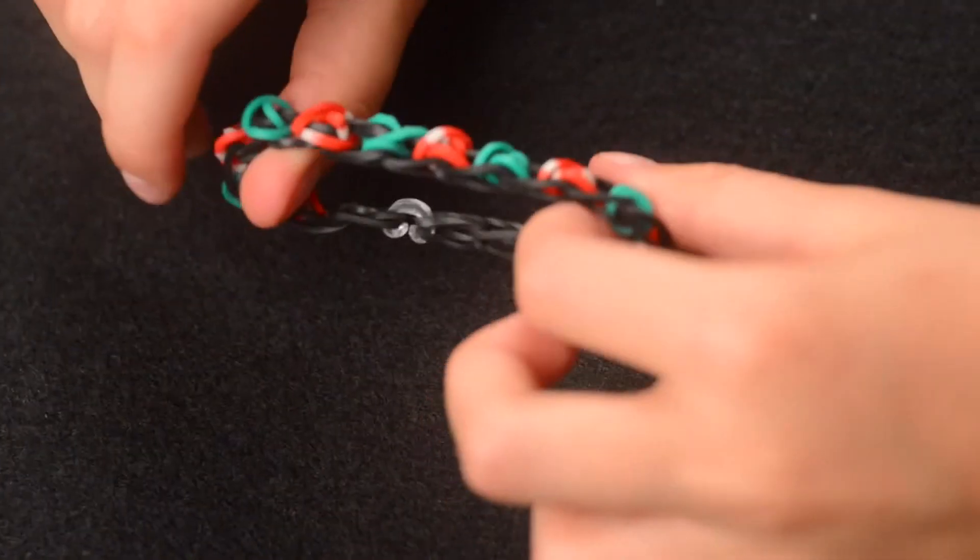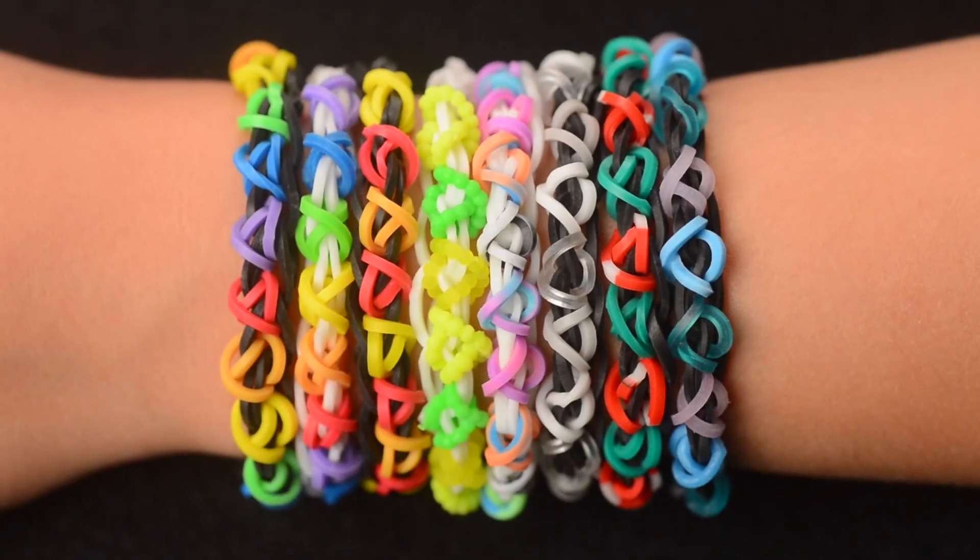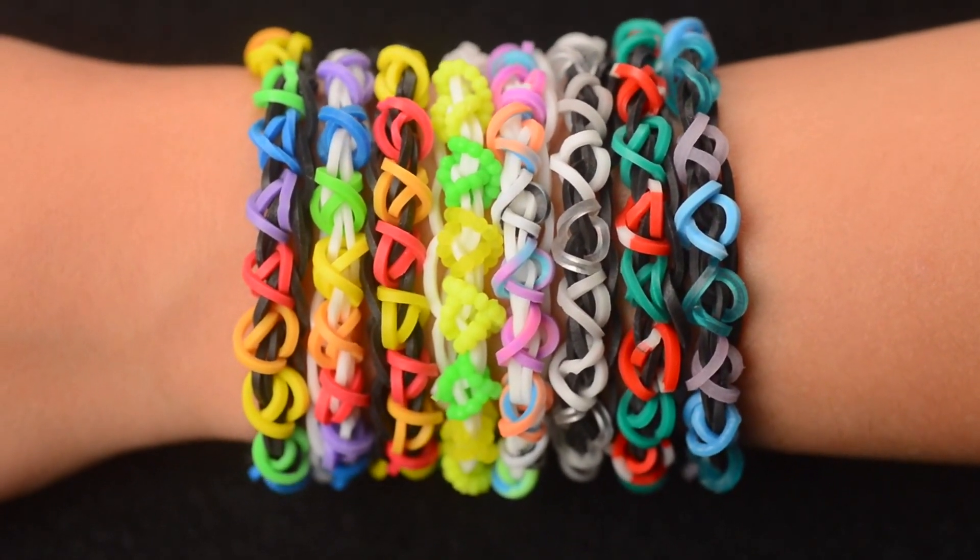Once you've finished, it should look like this. There you have your Rainbow Loom Geometry Dash Bracelet. Thanks for watching.